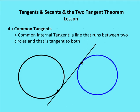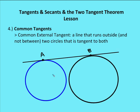There are two types of common tangents. The first is the common internal tangent, which runs between two circles — say circle A and circle B — touching both circles at one point and passing between them. The second is the common external tangent, which runs outside but not between two circles — say circle O and circle P — touching each circle at exactly one point. We'll use common external tangents when finding the length of a common tangent in the next video.